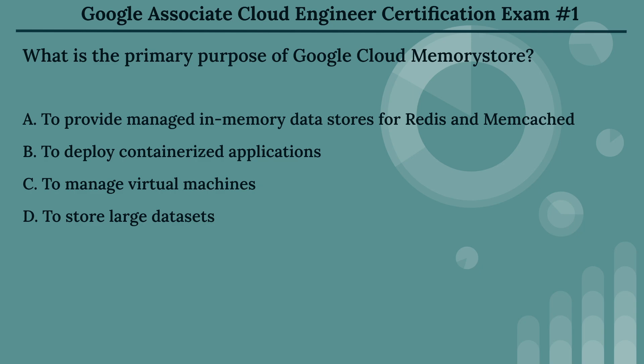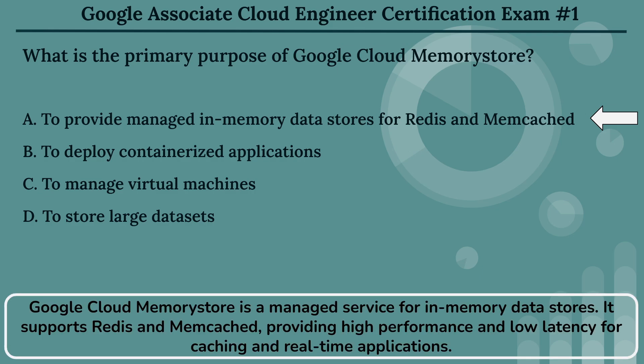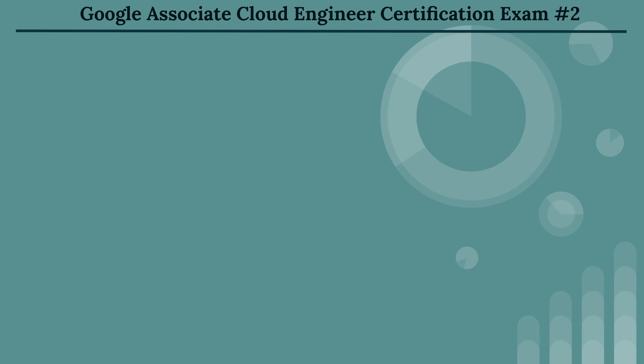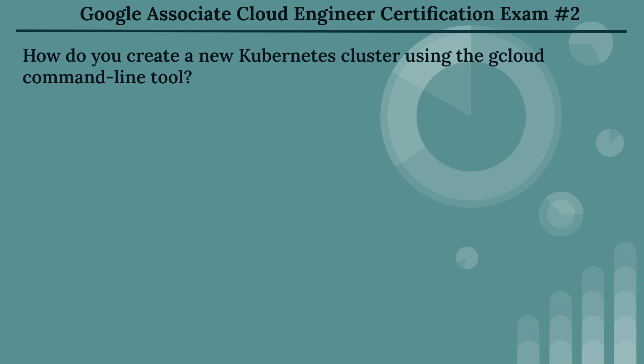The right answer is Option A: to provide managed in-memory data stores for Redis and Memcached. Google Cloud Memory Store is a managed service for in-memory data stores. It supports Redis and Memcached, providing high performance and low latency for caching and real-time applications.